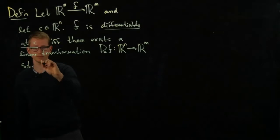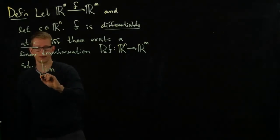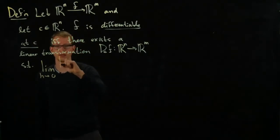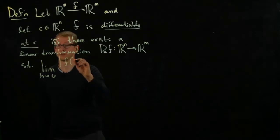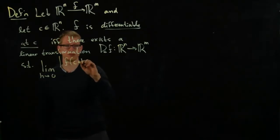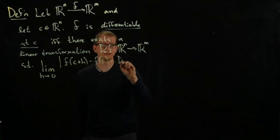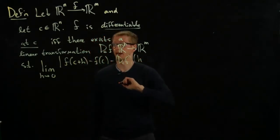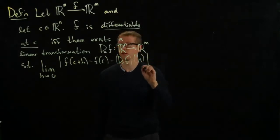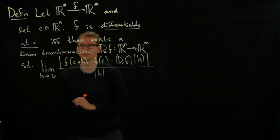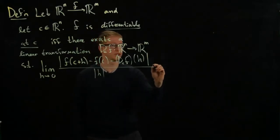Such that the limit as H approaches 0 of the following expression, motivated by our previous discussion: F of C plus H minus F of C minus DCF evaluated at H, divided by H itself. And this limit equals 0.